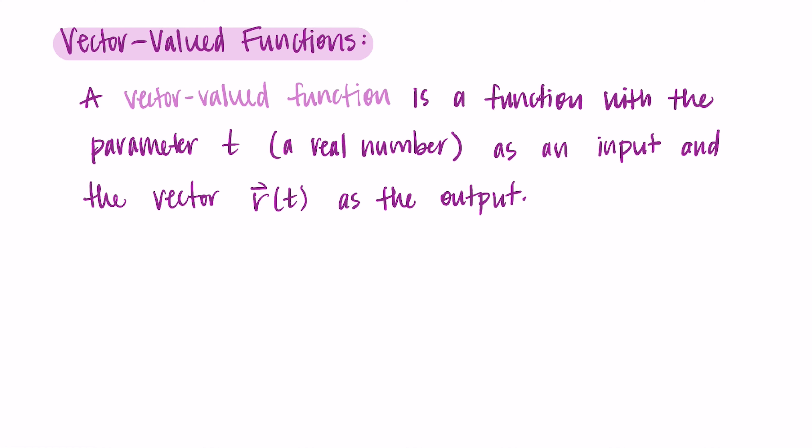So the way we write this is r(t), where that r is a vector, and it's equal to a three-dimensional vector x(t), y(t), and z(t). So potentially you could have vector-valued functions with more dimensions, but we're just focusing on three dimensions here.